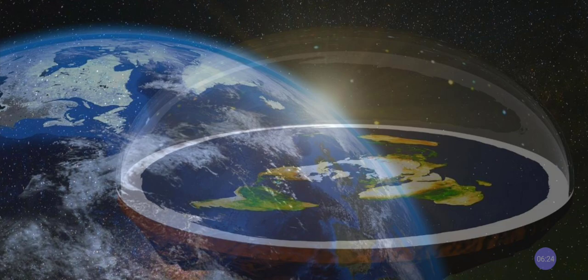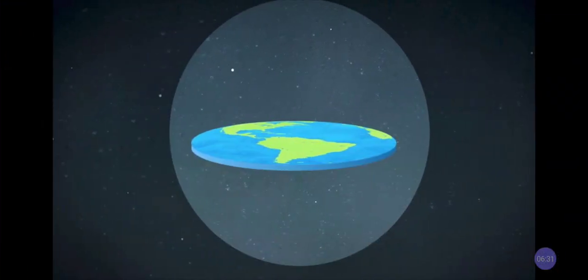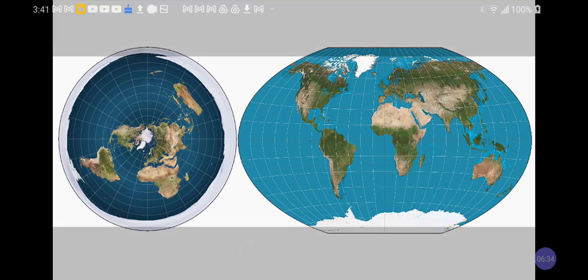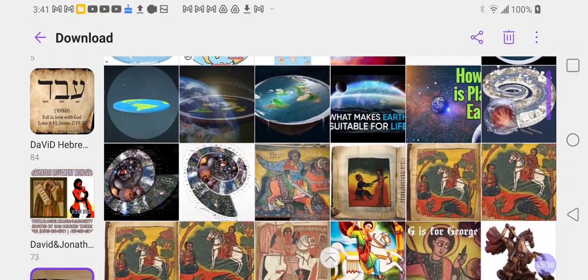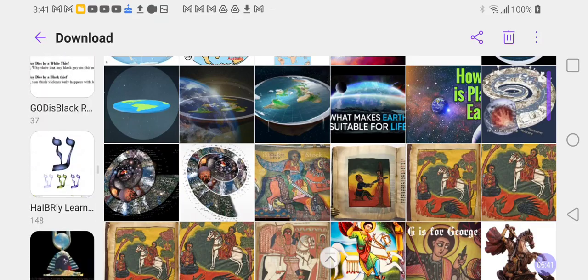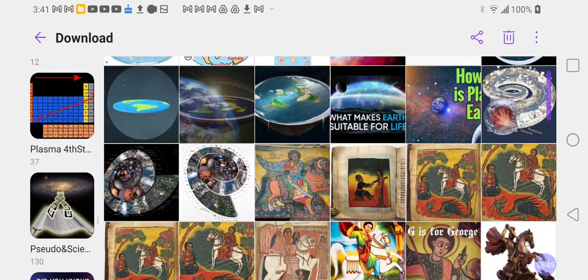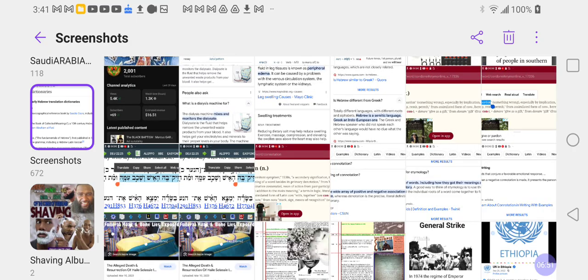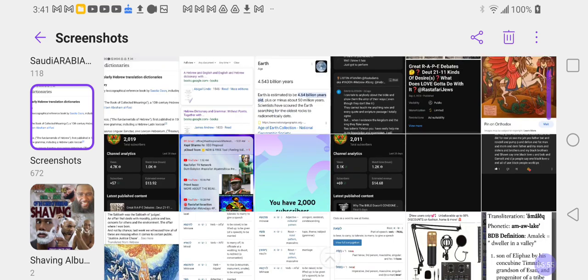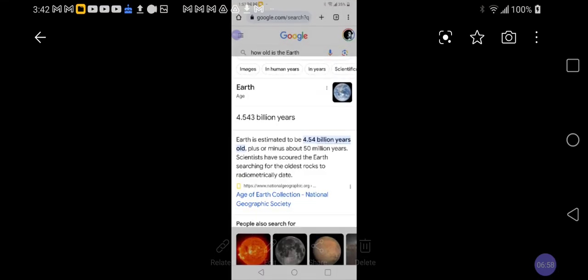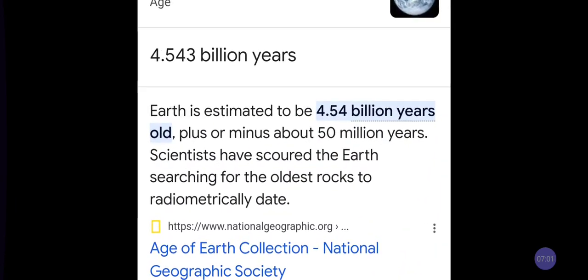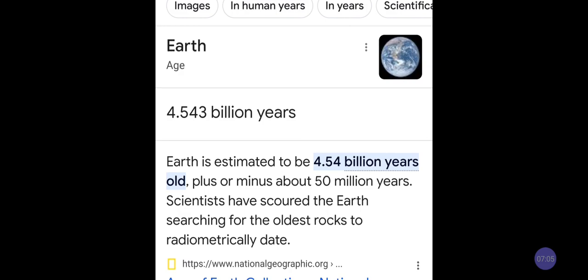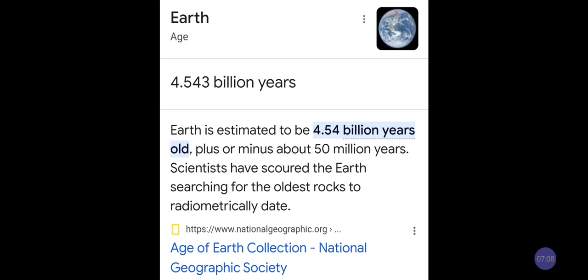Biblically speaking, even the scientists kind of know that, although they will say to us, let's see if we can get this right here. They say something very interesting. Earth's age, they say 4.543 billion years. What do we think about that? Could be.